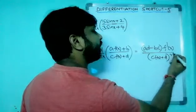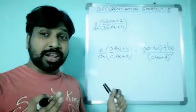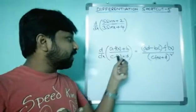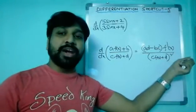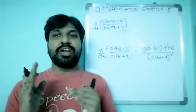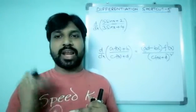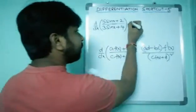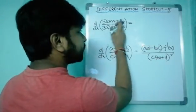Same as shortcut number 4, but the important point is: whatever f(x) is there, just apply its derivative here. So the shortcut formula is: (ad − bc)·f'(x) / [c·f(x) + d]². Now apply this to our problem — it is of the form (5·sinx + 2) / (3·sinx + 4).